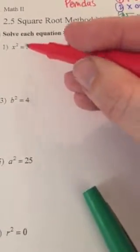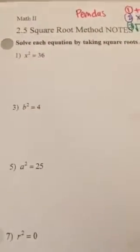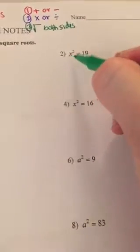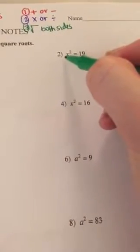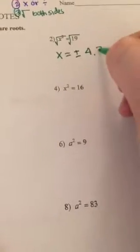Let's try it. On problem number one, we check: can we add or subtract? No, there's nothing with the x squared we can add or subtract. We can't multiply or divide, so we square root both sides and get x equals plus or minus 6. Problem number two is the same thing — there's no value being added or multiplied, so I square root both sides and get x equals plus or minus 4.36.